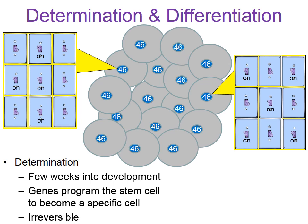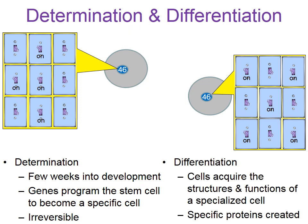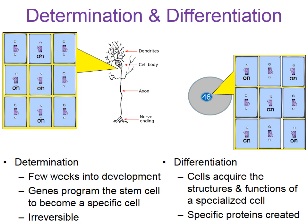This process of determination leads to differentiation — where the stem cells actually acquire the structures and functions of a specialized cell. The embryonic stem cell produces a very specific combination of proteins. The stem cell on the left has a different combination of genes activated, which might allow it to become a nerve cell. The cell on the right, because it has a different combination of genes activated, might become a red blood cell. The cells have differentiated and become different.